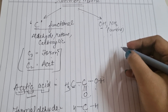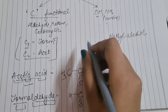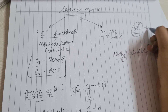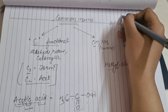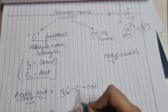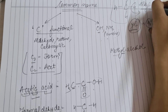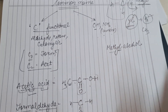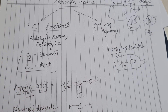OH और amine के case में: Methyl Alcohol — 'yl' जब किसी के पीछे आता है तो उसमें से एक hydrogen कम होता है। Methane में से एक hydrogen हटाने पर CH₃ — Methyl बनता है। CH₃ + OH = Methyl Alcohol। यह Alkyl Group होता है।